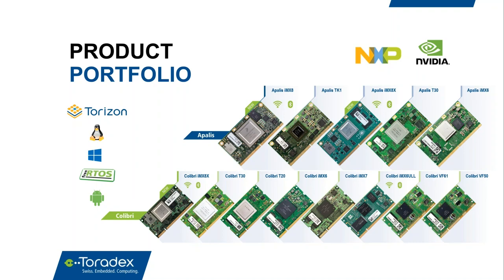The Colibri is a smaller form factor that is more cost and power sensitive, while the Apalis is a larger form factor with more powerful and modern interfaces. Our modules are pin-compatible within each family, meaning you can easily upgrade or downgrade the hardware as you evaluate. Our SoC providers are NXP mainly with the i.MX line, but we also have some products from NVIDIA with SCs like the T20 and TK1. Our software comes free with the hardware, such as Torizon.